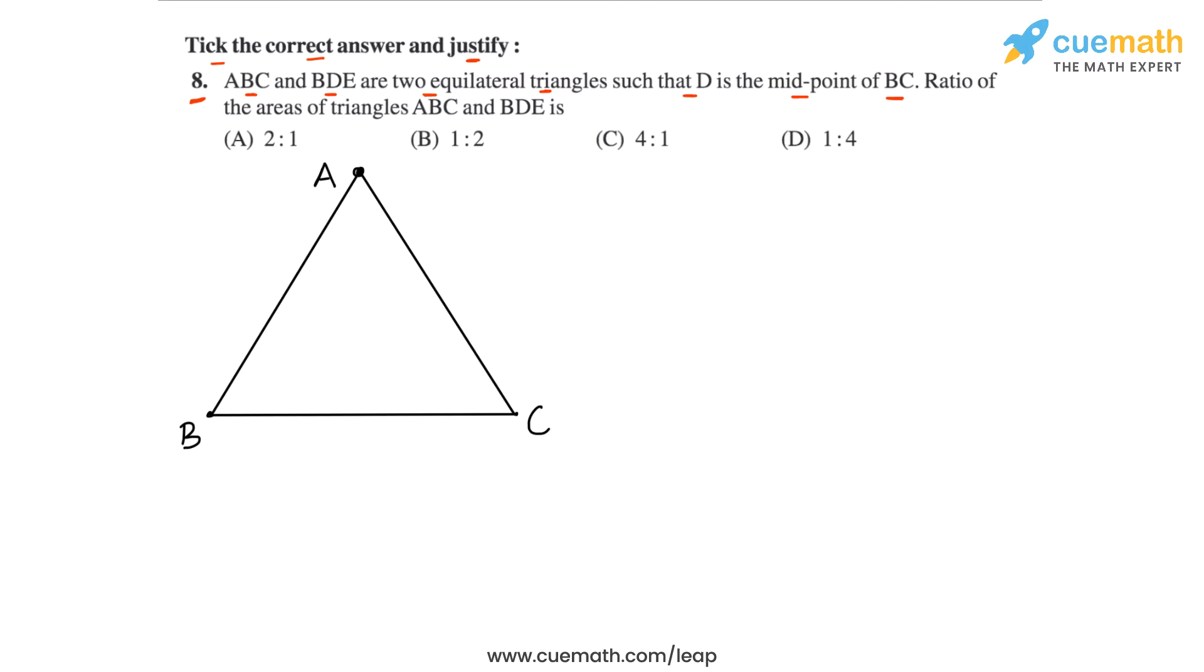So here's a triangle ABC that I've drawn that is an equilateral triangle and BDE is also an equilateral triangle such that D is the midpoint of BC. So let's take the midpoint of BC this point here as our point D and let's draw a triangle BDE that is equilateral with BD as one side.